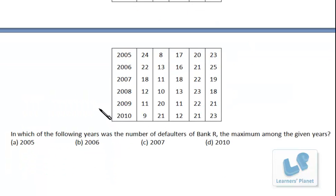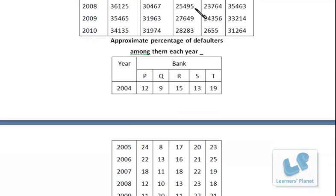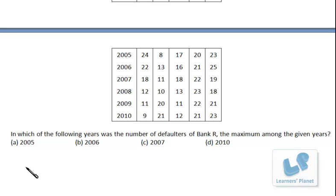Now let's see this question: in which of the following years was the number of defaulters of Bank R the maximum among the given years? Now there are 2005, 2006, 2007 and 2010. First of all let's see defaulters of Bank R in these years. So in 2005 for Bank R this is 32,461. So I'll just write it over here - 32,461. First of all I'll note down the data then I'll find out the percentage.